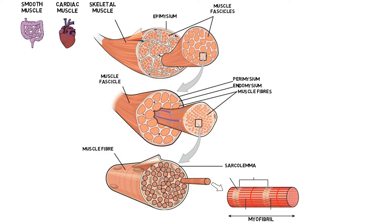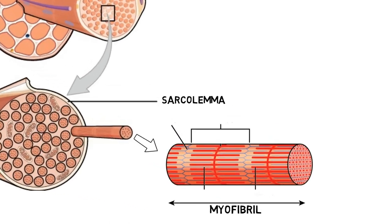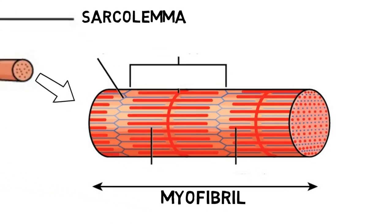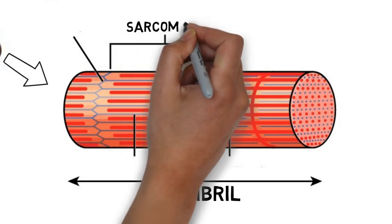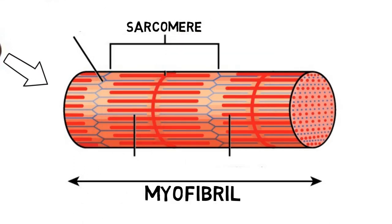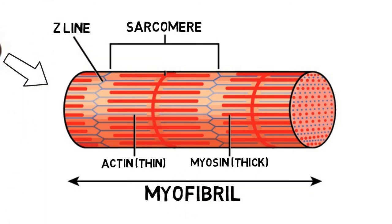We need to explore a little deeper. The sarcomere is the functional unit of the muscle and is made up of different types of protein filaments: actin, myosin, and titin. These filaments form a number of repeating sections within a myofibril. It is here where the main action happens during the sliding filament theory, a process that produces a muscular contraction.